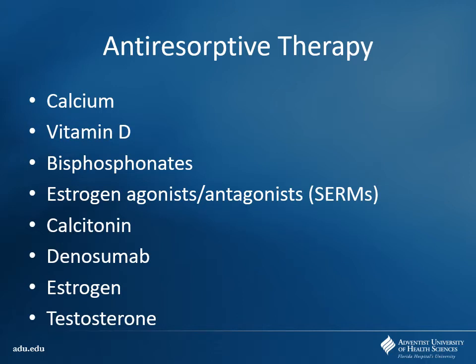Looking at our anti-resorptive therapy options. We already talked about calcium and vitamin D. For bisphosphonates — examples include Boniva and Fosamax — the oral options are alendronate, ibandronate, and risedronate. There's one IV option called zoledronic acid. We also have selective estrogen receptor modulators — SERMs. And a few other drugs: calcitonin, denosumab, estrogen, and testosterone. SERMs like raloxifen and tamoxifen were used in chemo for breast cancer — they act as antagonists in breast tissue but may act as agonists elsewhere.